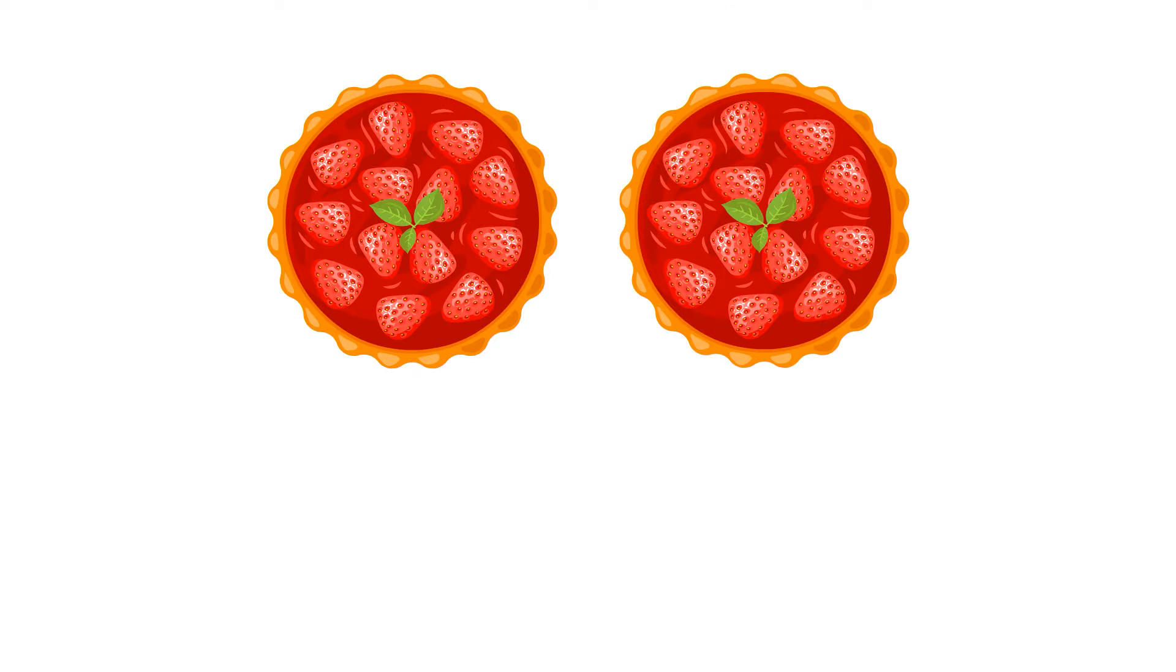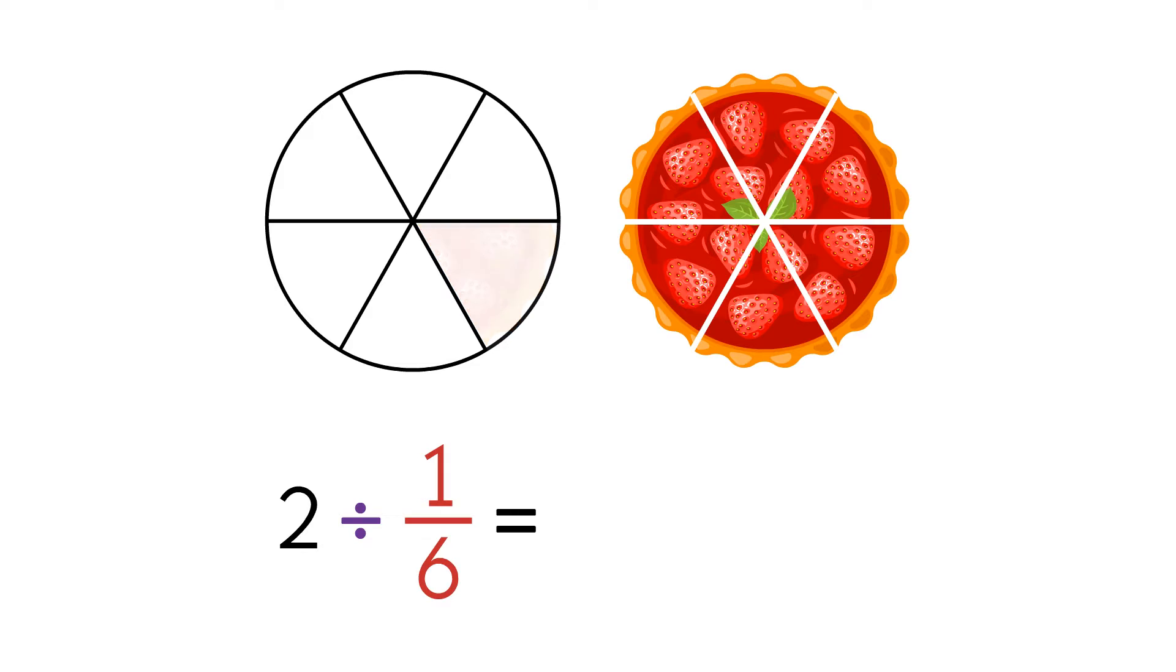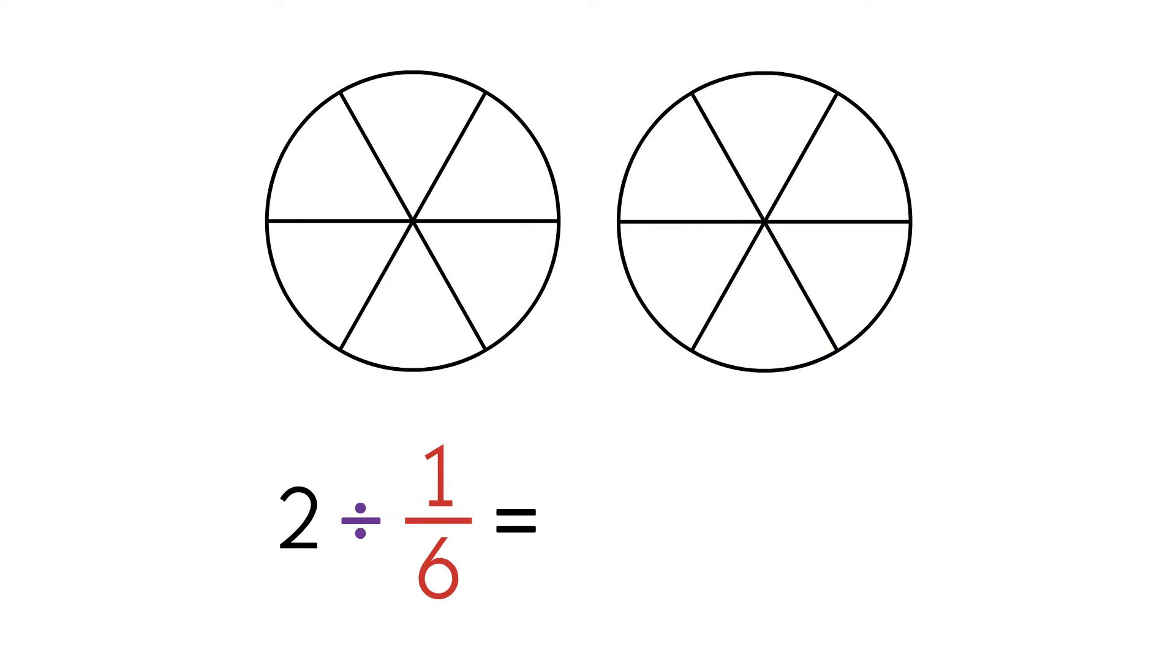Let's try another example. We have 2 pies, and we split them up into 6 pieces each. We have to find out how many pieces we have in all. We need to solve 2 divided by 1 sixth. Let's use a diagram to help. As you can see from the diagram, we have 6 slices in each pie, which is the same as 6 plus 6. So we have 12 slices. This is the same as 2 times 6.